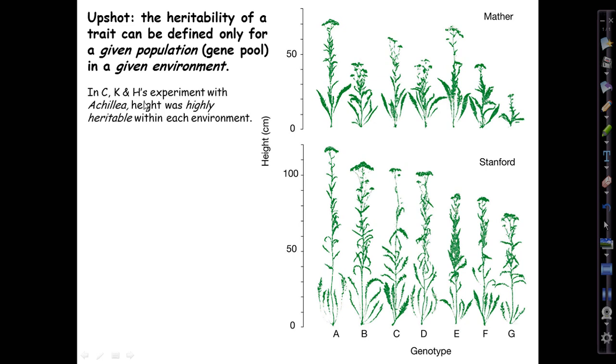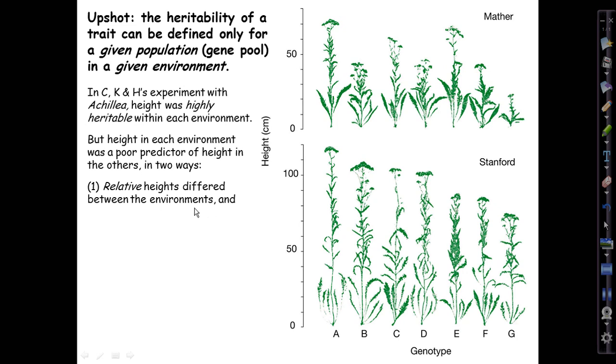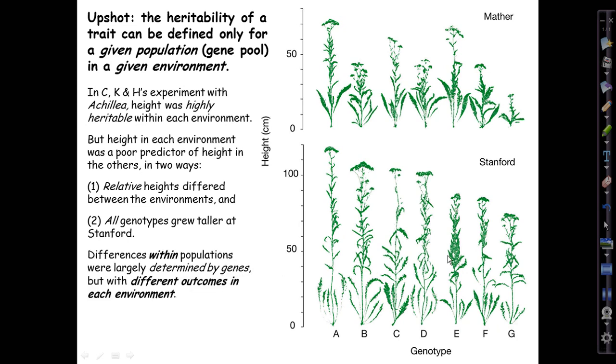In the Clausen, Keck, and Heisey experiment, height was highly heritable within each of these environments. The plants differ, and they differ because of their genotypes. You could select for plant height in either of these environments and get a big response. Lots of the variation was heritable. But the height in each environment was a poor predictor of height in the other environment in two different ways. The relative heights differed between the environments, and all of the genotypes grew taller at Stanford than they did at Mather.